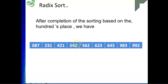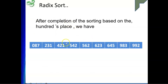We start from the least significant bit and sort the elements. The sorted output becomes the input for the next digit. Then we sort by the most significant bit to complete the process. We use 10 buckets from 0 to 9 because there are 10 possible digits. If more than one number maps to the same bucket, we place them after each other. This can be represented using a queue or a linked list.